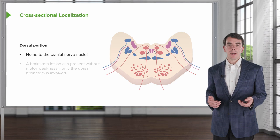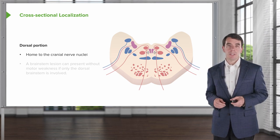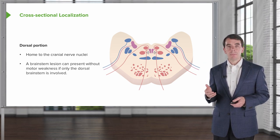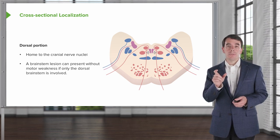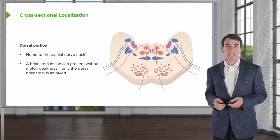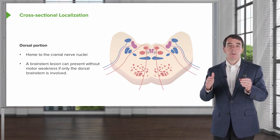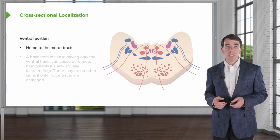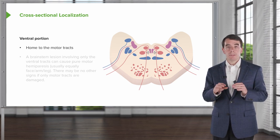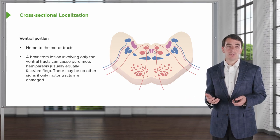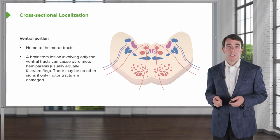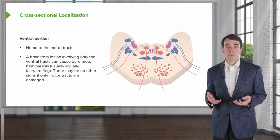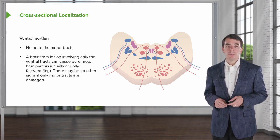We can also divide the brainstem into ventral and dorsal portions. The dorsal portion is home to the cranial nerve nuclei, so brainstem lesions here can present without motor weakness — just cranial nerve nuclear deficits — typically from deep perforating arteries off the basilar. The ventral aspect is home to the motor tracts: the corticospinal and medial lemniscal tracts. Lesions involving only the ventral tracts can cause a pure motor hemiparesis, usually with equal face, arm, and leg involvement if the pons is involved, with no cranial nerve signs.